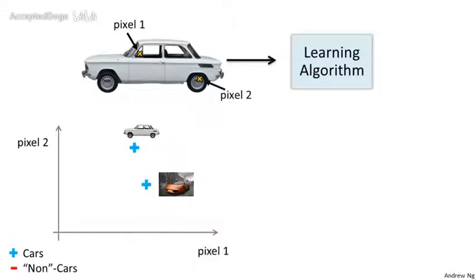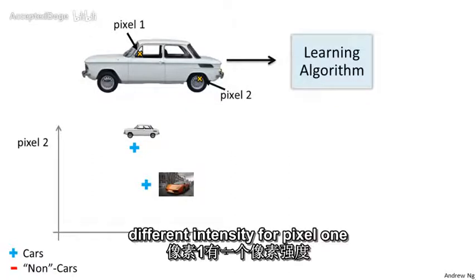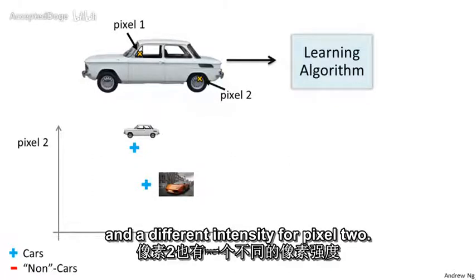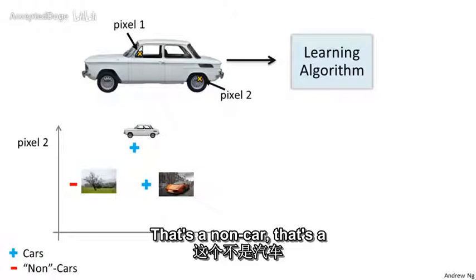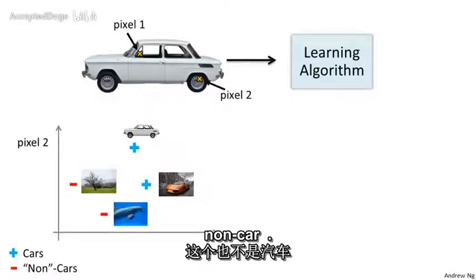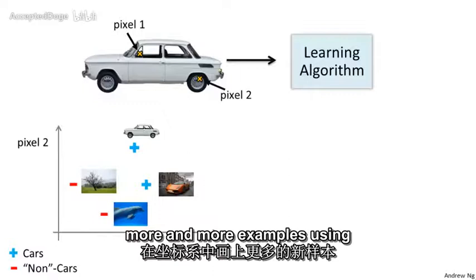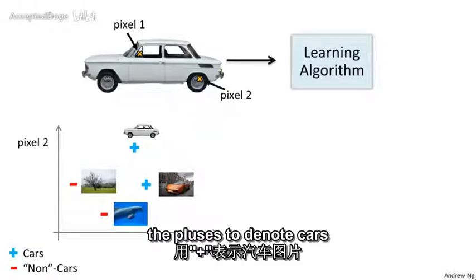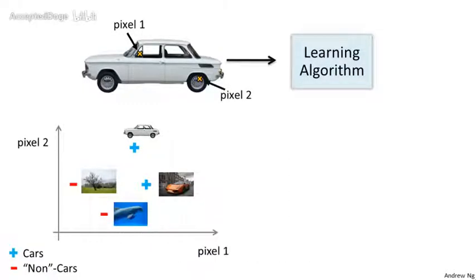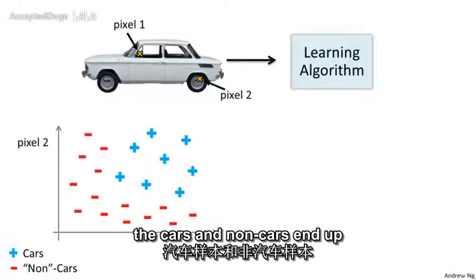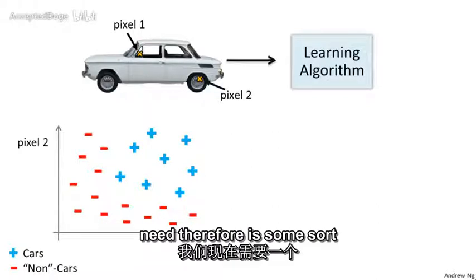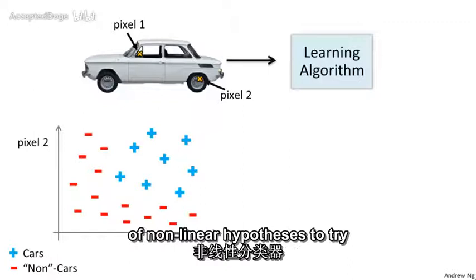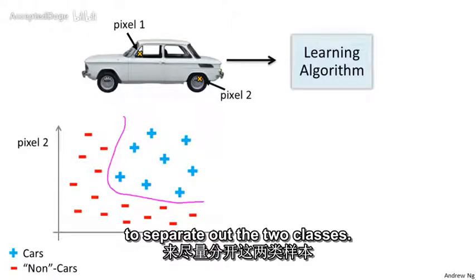So let's take a different example of a car and look at the same two pixel locations. That image has a different intensity for pixel one and a different intensity for pixel two. So it ends up at a different location on the figure. And then let's plot some negative examples as well. That's a non-car, that's a non-car. And if we do this for more and more examples, using the pluses to denote cars and minuses to denote non-cars, what we'll find is that the cars and non-cars end up lying in different regions of this space. And what we need, therefore, is some sort of non-linear hypothesis to try to separate out the two classes.